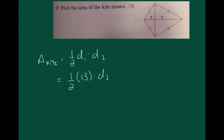All right, number 7, they give us one diagonal. It's 13. So, I'm going to use the one-half d₁ times d₂ formula, and I'll plug in 13 for diagonal 1. But I need to find diagonal 2.